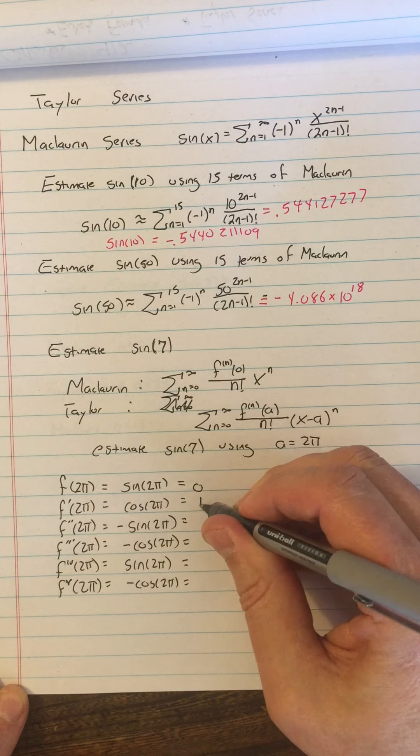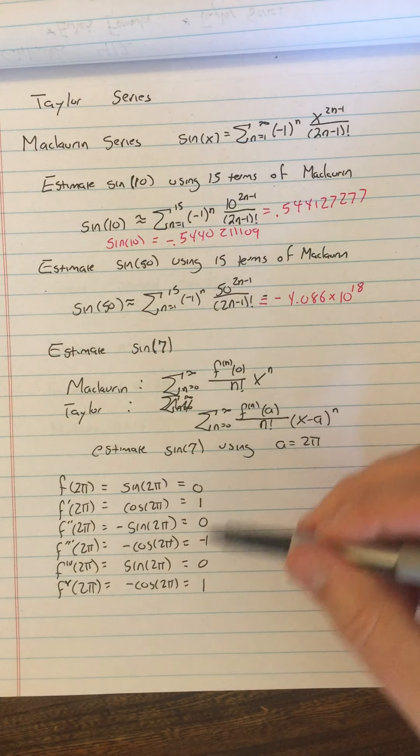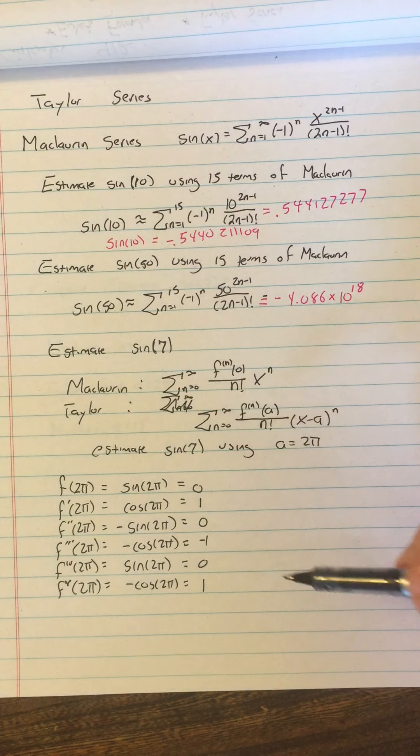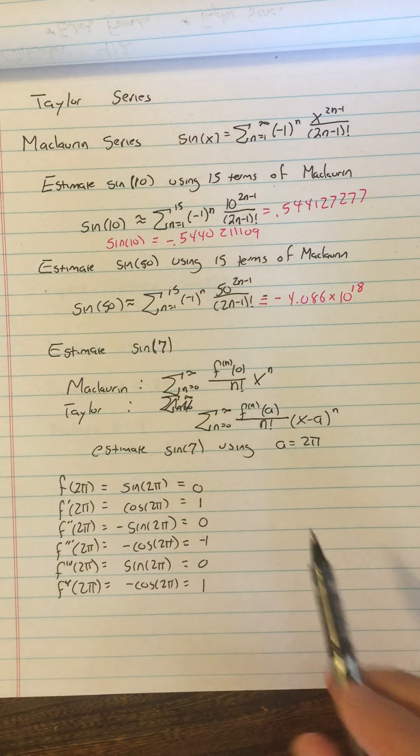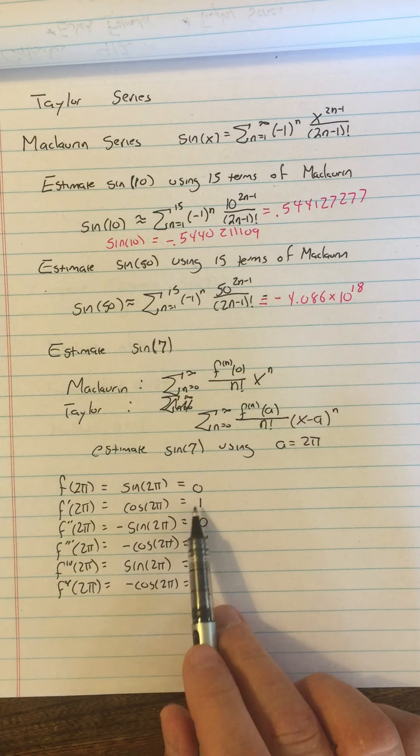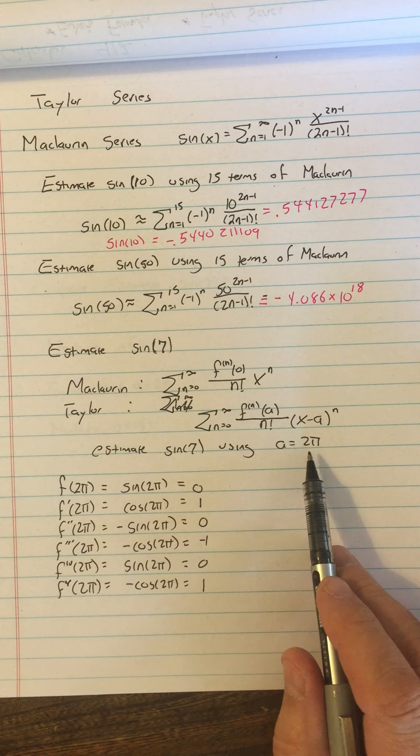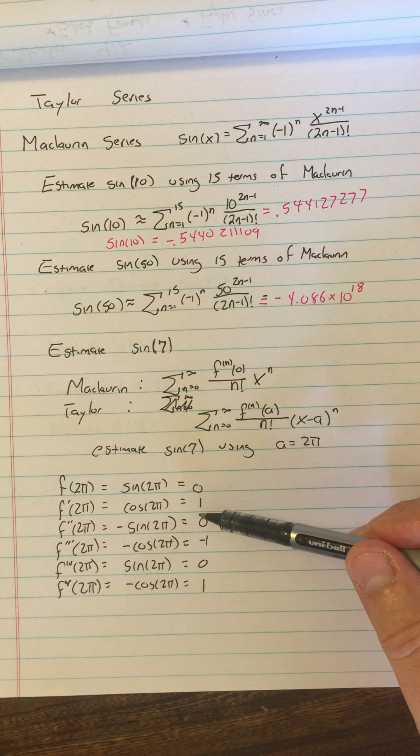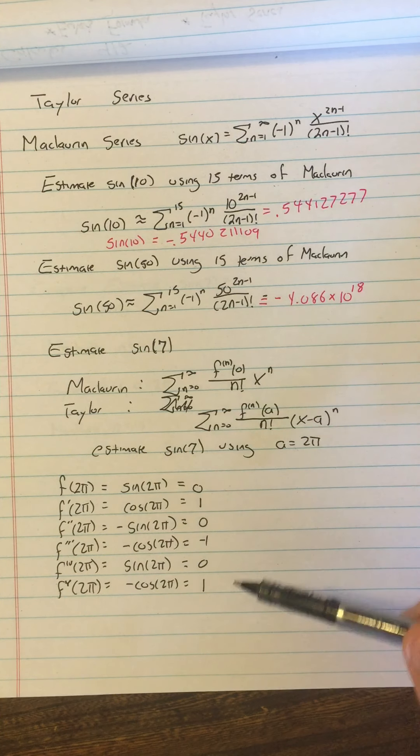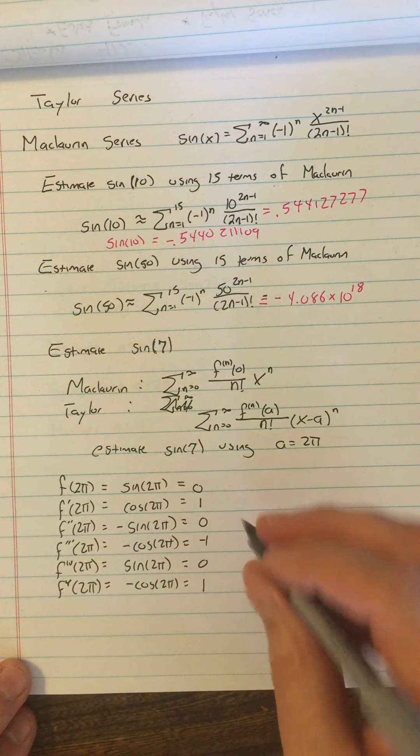We get 0, 1, 0, negative 1, 0, and 1. Now, these coefficients happen to be the same coefficients that we had for the Maclaurin series, but that does not have to happen. If we had used, for example, a equals 3π, then these signs would change. Or if we had used a equals π over 4, then all of these would be root 2 over 2 and some of them would be positive and some of them would be negative. But that was part of my motivation choosing 2π because it doesn't change the series much.